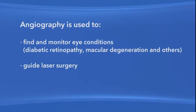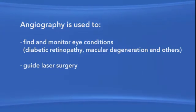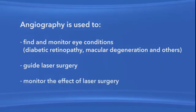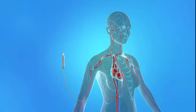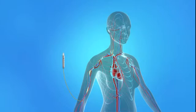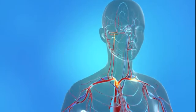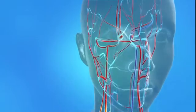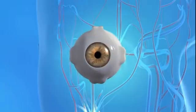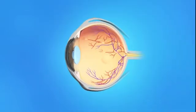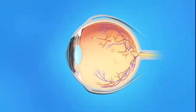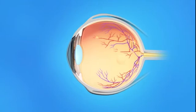After laser surgery, angiography may be used to help monitor the effect of the laser procedure. With angiography, a colored dye is injected into a vein in your arm or in your hand, where it travels throughout the blood vessels in your body. As the dye passes through the eye's blood vessels, a special camera takes photographs of the retina or choroid blood vessels.